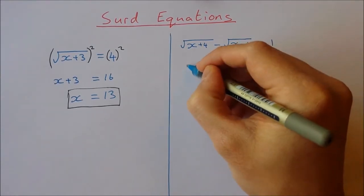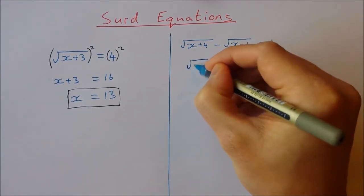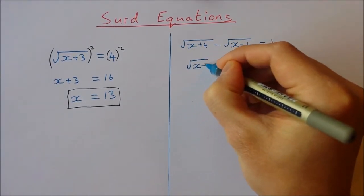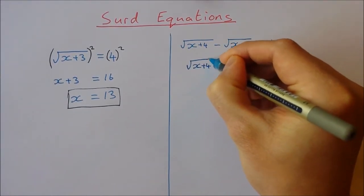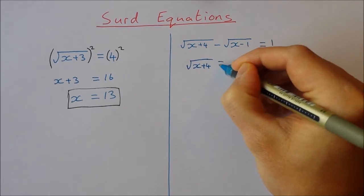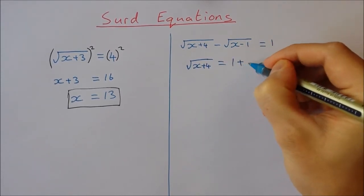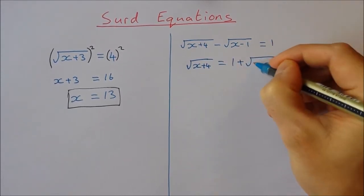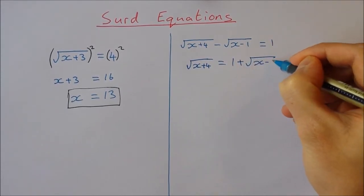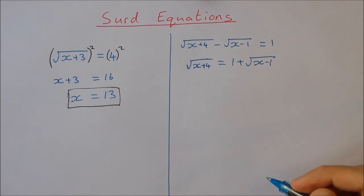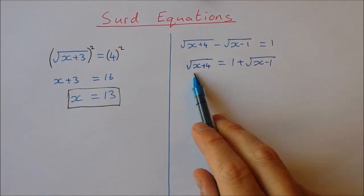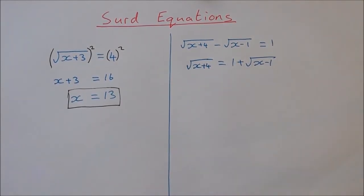So I'm going to isolate the square root of x plus 4 on the left-hand side on its own by adding the square root of x minus 1 to both sides. So the square root of x plus 4 is equal to 1 plus the square root of x minus 1. Now I have it isolated and I can square both sides.